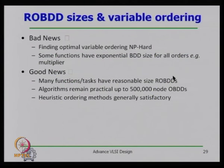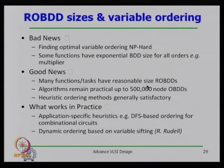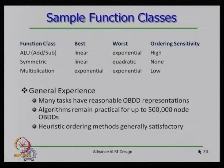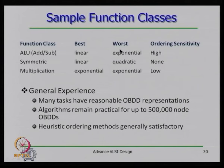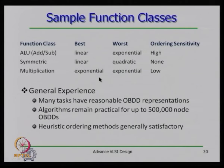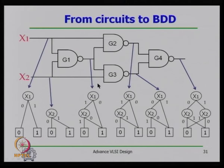Finding the optimal variable ordering is NP-complete, but for most functions you can find a good ROBDD in reasonable time. The algorithm remains practical up to about 1 million nodes in an ordered binary decision diagram.